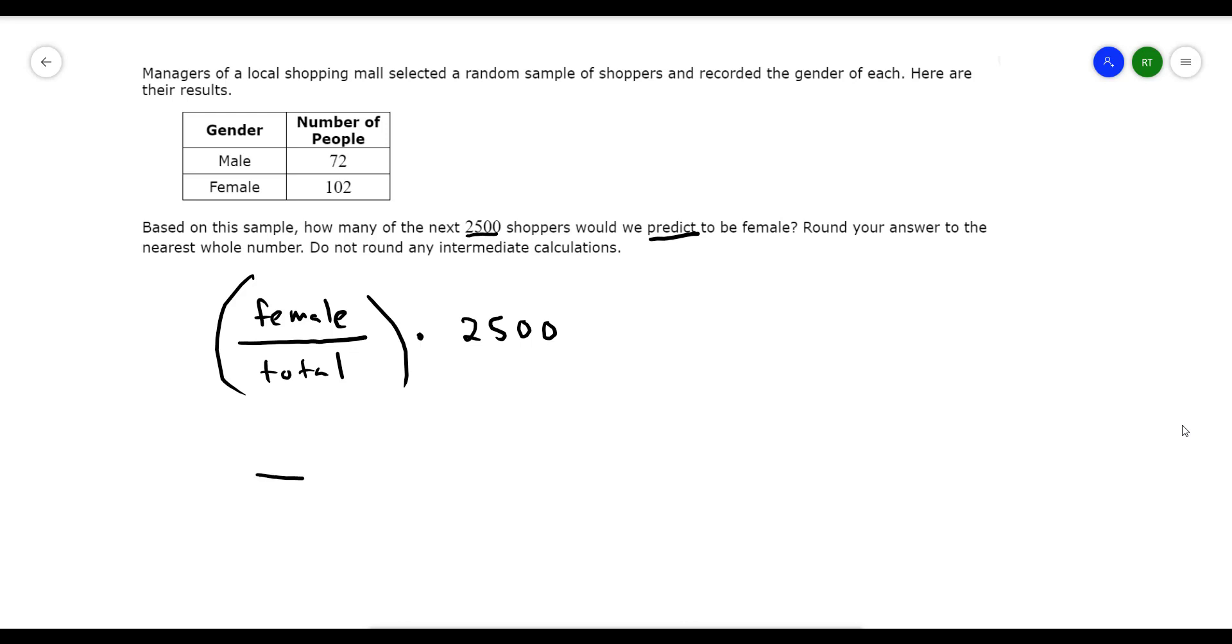So going to my data, number of females is 102. And altogether, meaning out of the male and the females combined, how many people are there? So that would be basically 102 plus 72, which is 174. So there's 102 people out of 174 people are female.